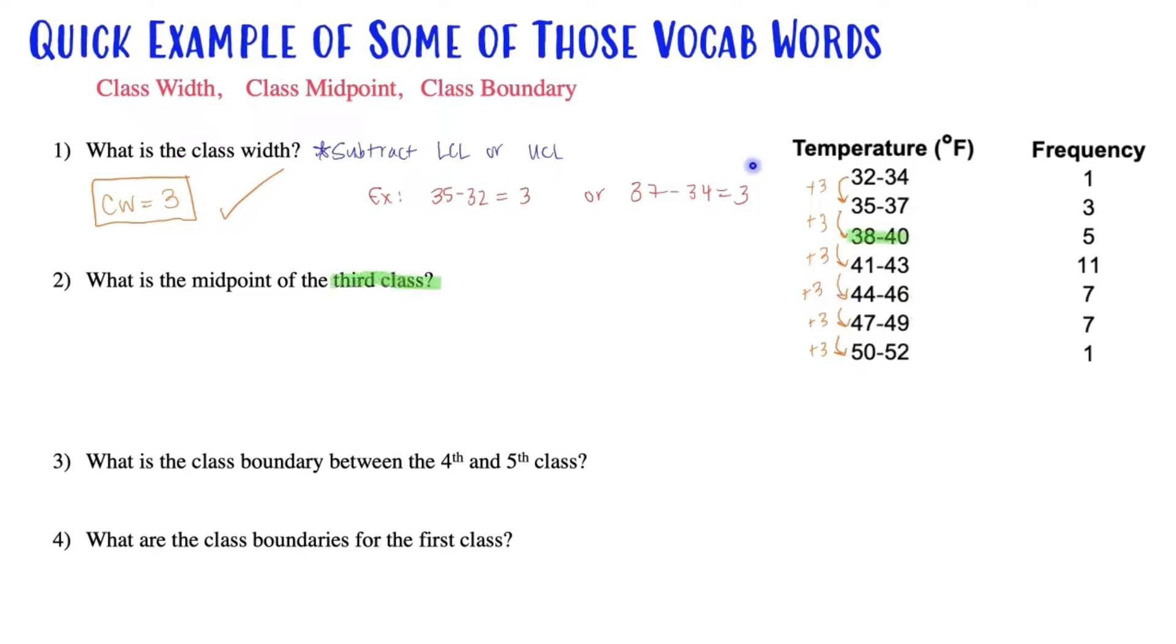So what's the class midpoint of the third class? This is 1, 2, 3. Here's your third class. What is the midpoint? Well, I want the middle number. Now 38 and 40 are very nice, easy numbers. You could actually think about it. What is the middle of 38, 39, 40? So you could already tell me the answer is 39.